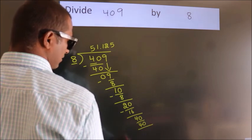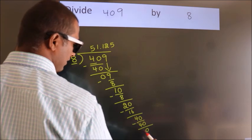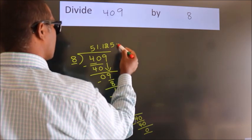Now we subtract. We get 0. Here we got remainder 0. So this is our quotient.